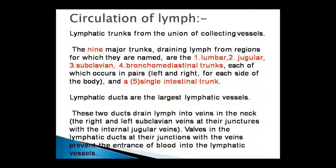How does lymph circulation work? Lymphatic trunks are created from the union of the collecting vessels. These are the major trunks. The main trunks are: the jugular, subclavian, and bronchomediastinal trunks — these four occur in pairs.